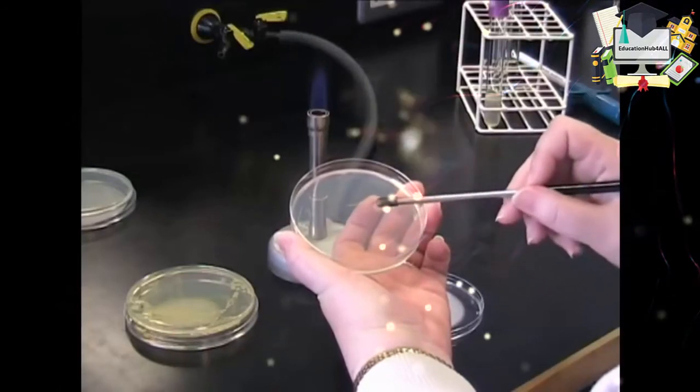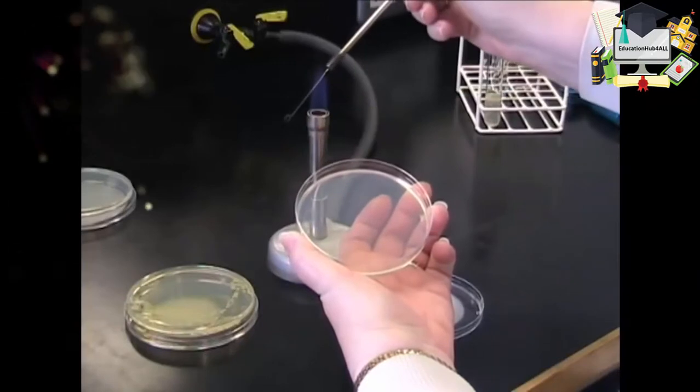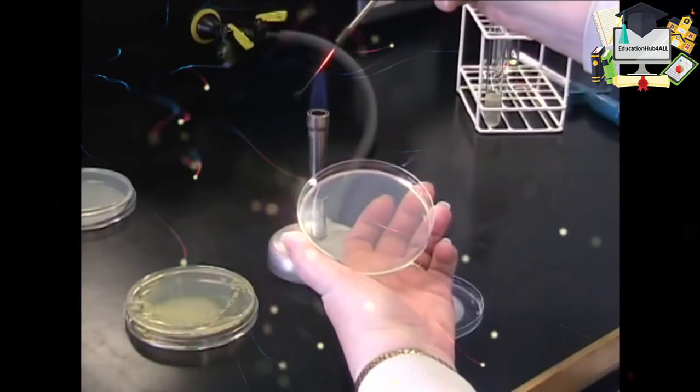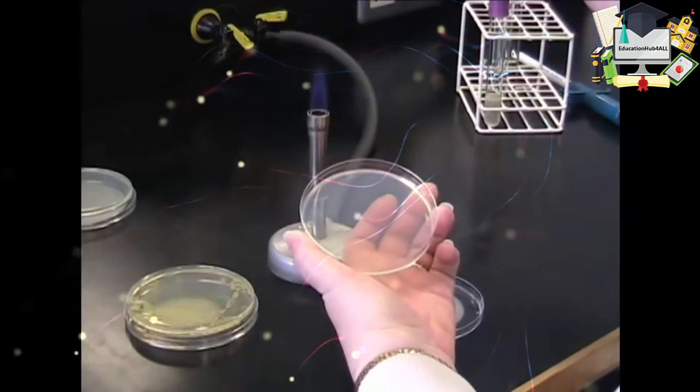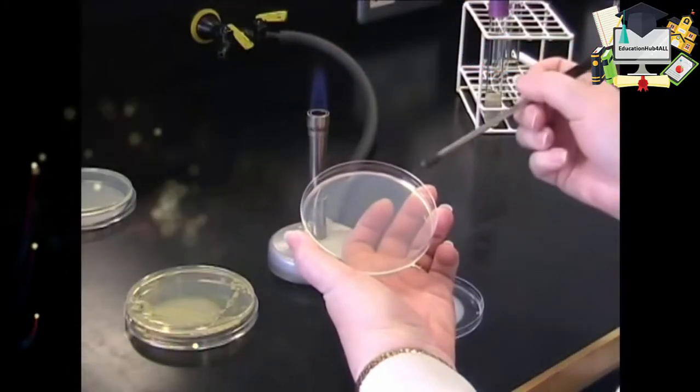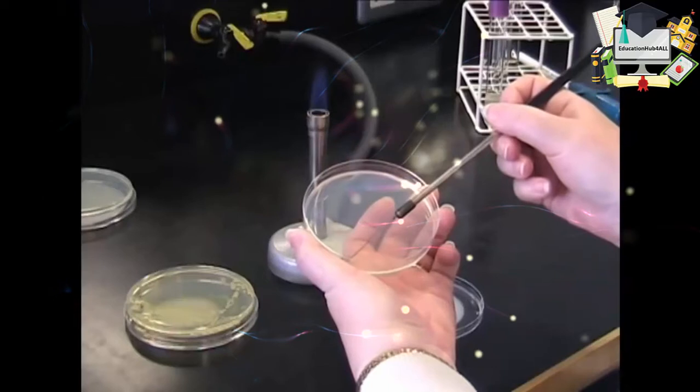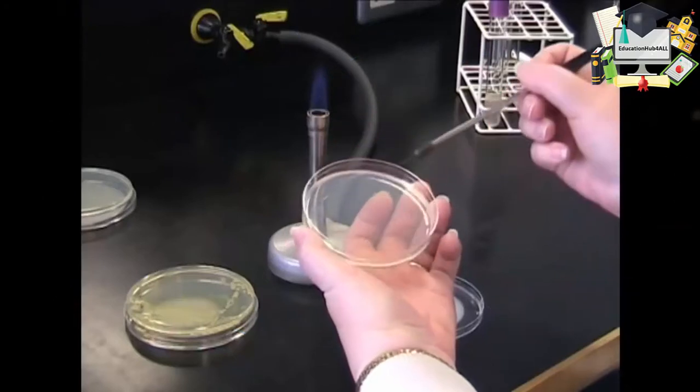It's important now to flame your loop again. Draw your loop slowly up through the flame to remove any bacteria from it. Cool your loop. If necessary, cool the loop onto the plate, just to make sure it's cool.